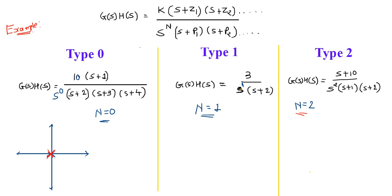By identifying the number of poles at the origin, we can classify type 0, type 1, and type 2 systems. I hope you have understood. If you have any queries or doubts, write in the comment section. I will discuss further in the next video. Thank you very much.